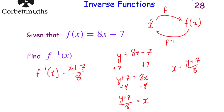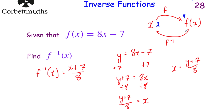Let's just check that. If x = 2, applying the original function: 8 × 2 = 16, minus 7 = 9. Now applying the inverse function to 9: 9 + 7 = 16, divided by 8 = 2. That brings us back to x = 2, confirming our inverse function is correct.